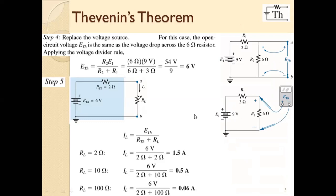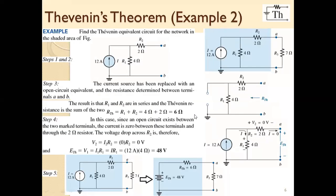So now we will go for solving problems. The first example says: find the Thevenin equivalent circuit for the network in the shaded area of the figure. This is the network and this is the shaded area. What you need to find is the Thevenin equivalent circuit — you will make the equivalent network and then write the values of ETH and RTH.